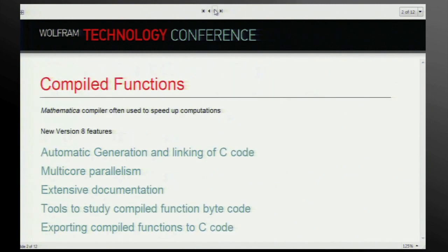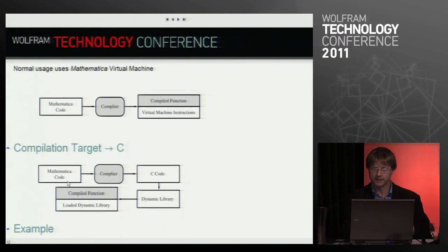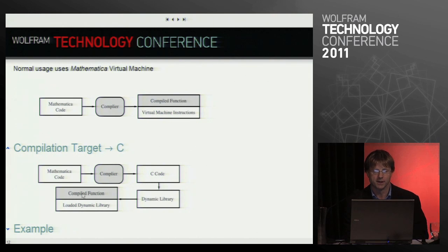What sorts of things did we do? One thing we did a lot of work on is innovating and revving the Mathematica compiler — trying to make it faster and use it in all sorts of interesting ways. One thing we did was add C code generation: automatic generation and linking of C code. The normal workflow for the compiler is you start with Mathematica, it goes through the compiler, and generates a compiled function containing virtual machine instructions. Now by setting a compilation target, it goes through extra stages of automatically generating C code in a dynamic library that gets loaded into Mathematica.